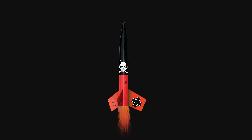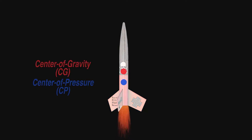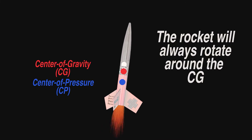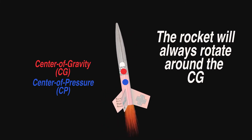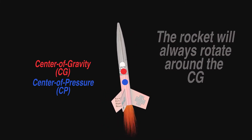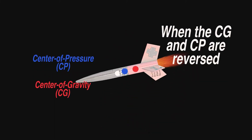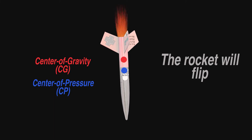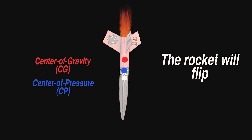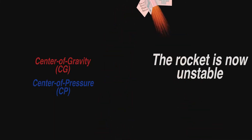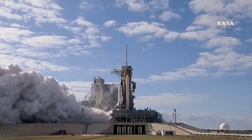The rocket will always rotate around the center of gravity. When it is in front of the center of pressure, it will stay there. However, when these positions are reversed, the rocket will flip continuously and uncontrollably. This is an unstable rocket.